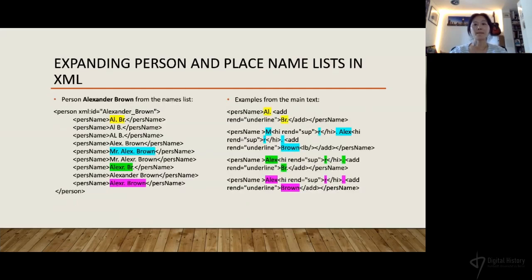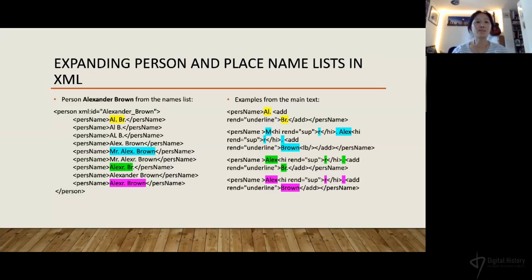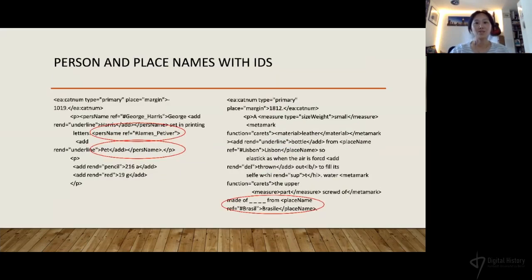It is common to see various spellings in early modern documents. There are variations of person and place name spellings appearing in the catalog. In order to make these names usable, creating a full list of names with a corresponding unique ID is crucial. For example, Alexander Brown is given the person XML ID 'alexander_brown,' and beneath that you can see various spellings of Alexander Brown. Now all persons and places mentioned in the catalog can be identified by the elements person name and place name, and by adding a ref attribute with a unique ID, all these names can be linked to the correct persons and places, and also to a relevant database or external resources such as GeoNames.